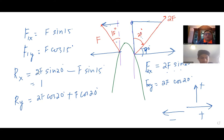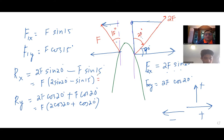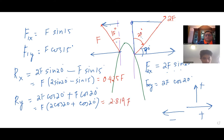Can you find what is 2 sin 20° minus sin 15°? And what is 2 cos 20° plus cos 15°? Sir, for the resultant x, the value inside the bracket would be 0.425. Yes. And the y component will be 2.819.